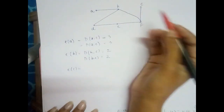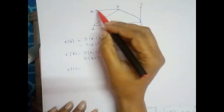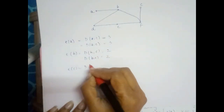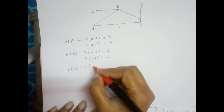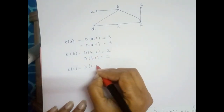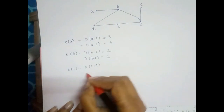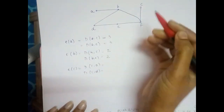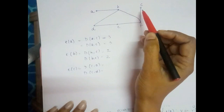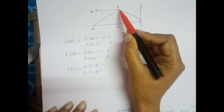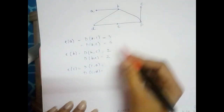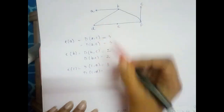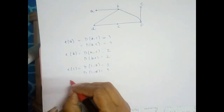For eccentricity of vertex c, we take far vertices such as a and d. Distance c to a: c to f, f to b, b to a gives 3 edges. Distance c to d: c to f, f to e, e to d gives 3 edges. No other vertex is farther, so the eccentricity of c is 3.